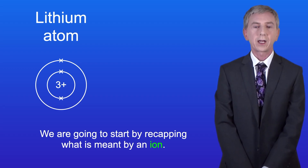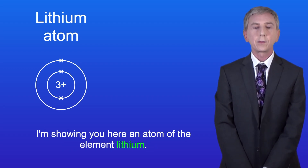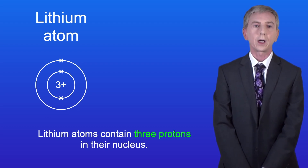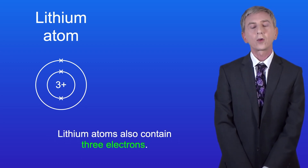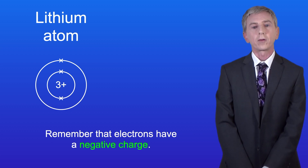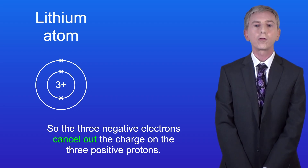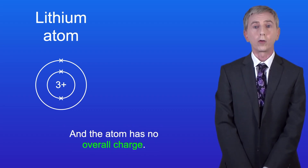We're going to start by recapping what's meant by an ion. Here is an atom of the element lithium. Lithium atoms contain three protons in their nucleus, and protons have got a positive charge. Lithium atoms also contain three electrons, and electrons have got a negative charge. So the three negative electrons cancel out the charge on the three positive protons, and the atom has got no overall charge.